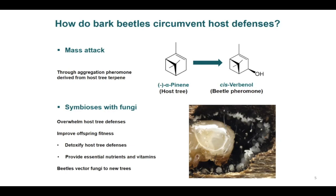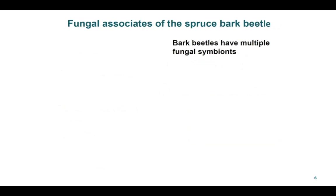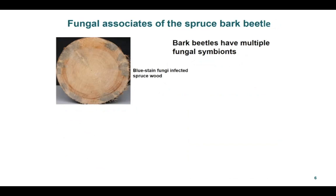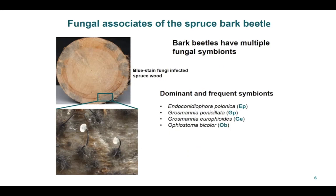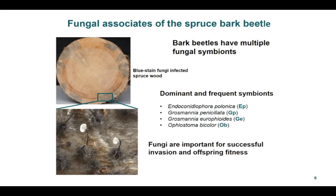Bark beetles are associated with multiple fungal symbionts, also known as blue-stained fungi, as they cause a bluish color in the infested phloem and sapwood. These are free-living ascomycetes belonging to different taxa. Out of multiple symbionts, the most dominant and frequent ones are Endoconidiophora polonica, Grosmannia penicillata, Grosmannia europhioides, and Ophiostoma bicolor. These fungi are suggested to be important for the successful invasion of bark beetles and for the fitness of the offspring.